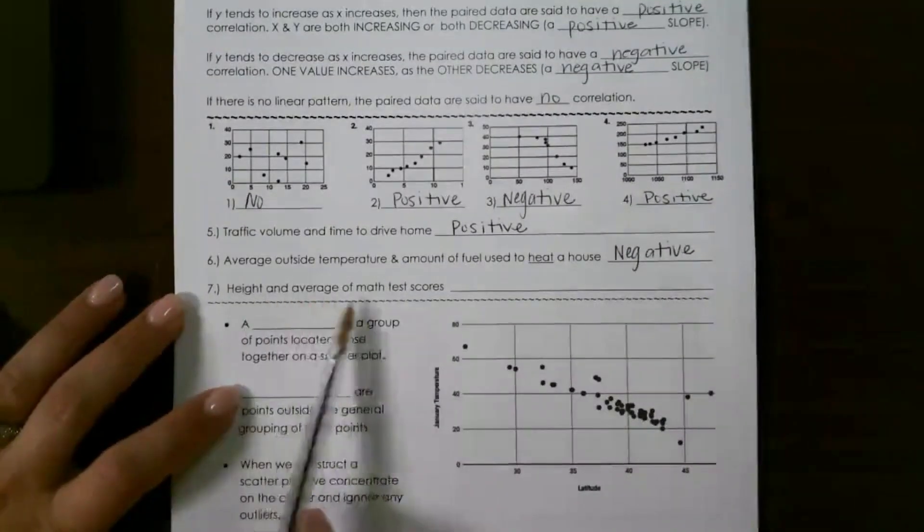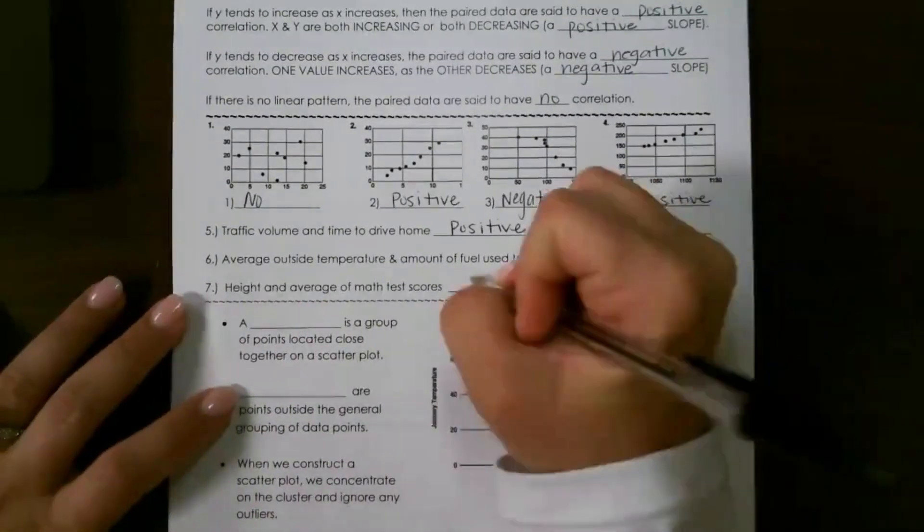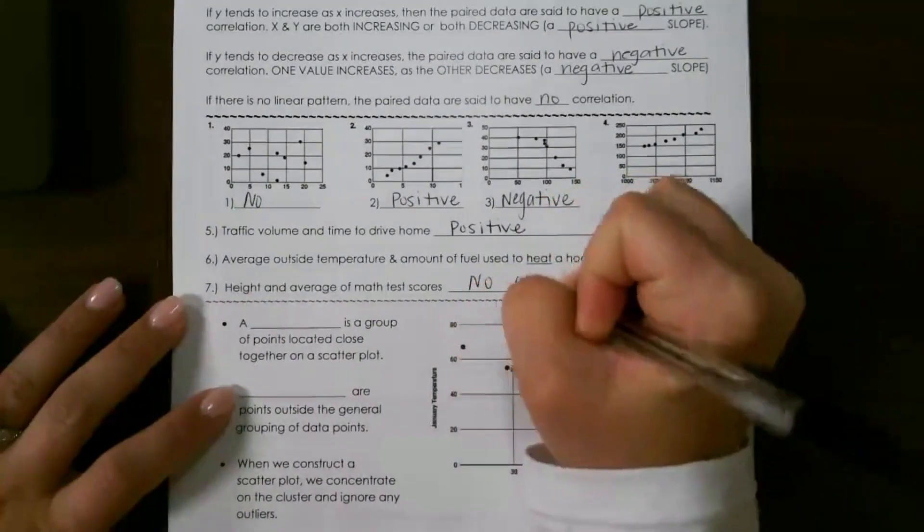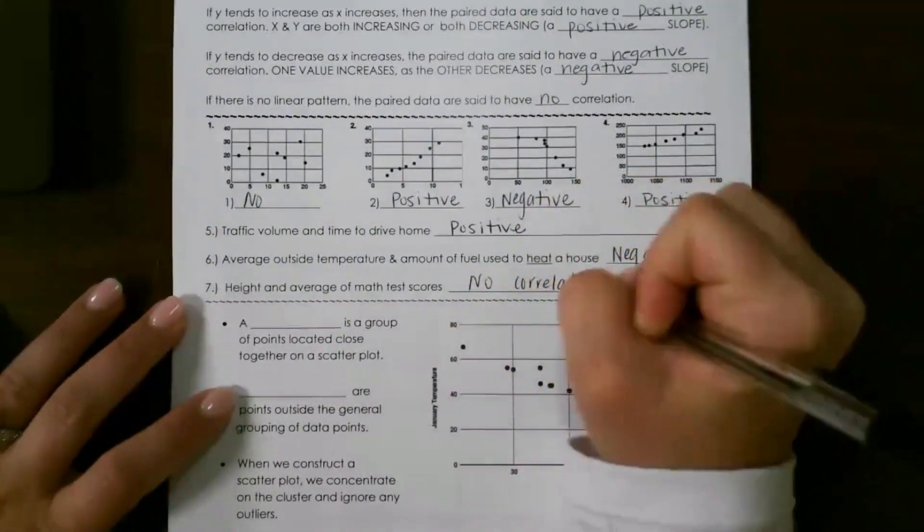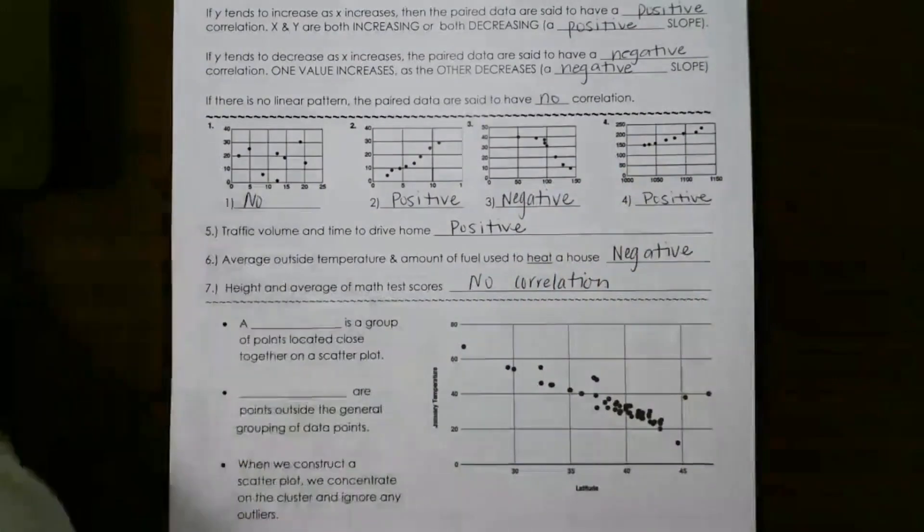And then I have height and the average of math test scores. This has no correlation because your scores are not affected by how tall or how short you are.